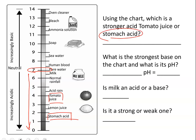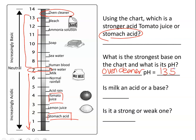What about the strongest base on the chart? Everything above 7 is a base, but the further up we go, the stronger the base. The highest number here is 14, and the closest to that is oven cleaner, which looks like it's at about 13.5. You can have decimals for pHs. Milk has a pH below 7 — maybe 6.5 — which is close to 7, but it's still an acid, just a very weak acid. Make sure you know how to read a chart like that.